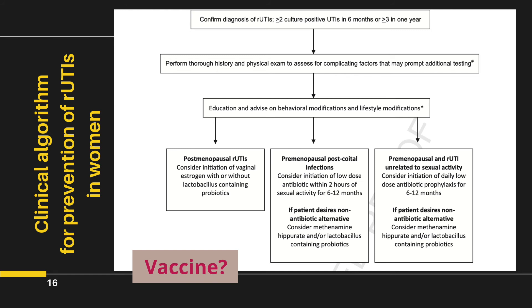A thorough history and physical examination should be done to identify risk or complicating factors that might prompt additional testing. Education and advice on behavioral and lifestyle modifications is a must. If the patient is postmenopausal, consider vaginal estrogen with or without lactobacillus probiotics. If she is premenopausal and infections are usually post-coital, consider initiating low-dose antibiotics within 2 hours of sexual activity for 6–12 months. For premenopausal women where recurrent UTI is not related to sexual activity, consider daily low-dose antibiotic prophylaxis for at least 6–12 months.